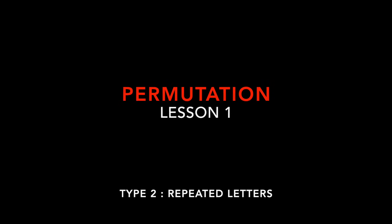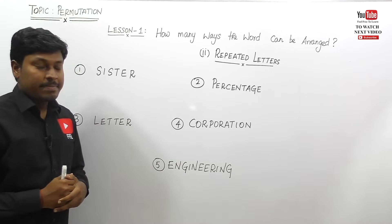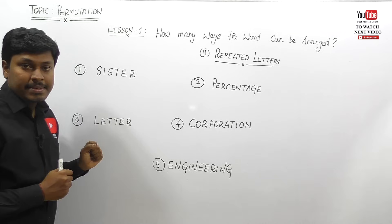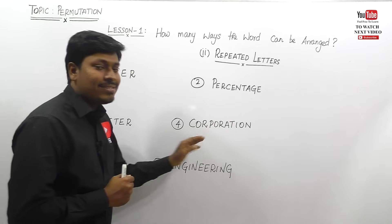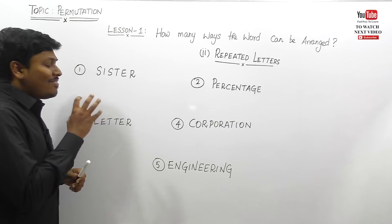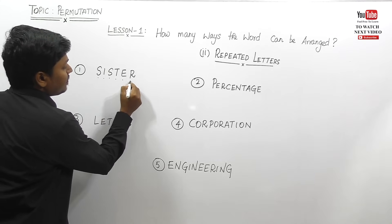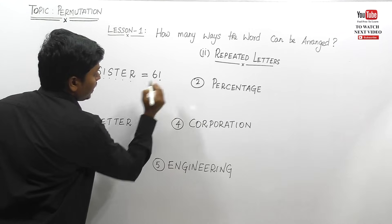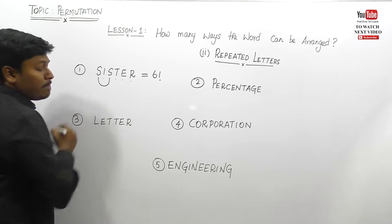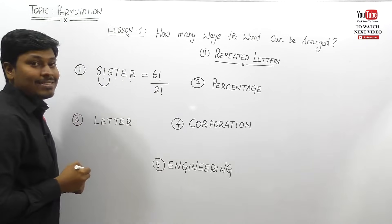Now let's move on to the second category: repeated letters. They give the word SISTER and ask how many ways it can be arranged. Count the letters — one, two, three, four, five, six — so write six factorial. But unlike before, here the letter S is repeated two times. Because S is repeated twice, we divide by two factorial. So the answer is six factorial divided by two factorial.